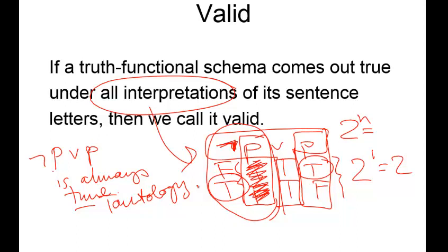When testing an argument, we turn it into a conditional and check whether the statement as a whole always comes out true. If it always comes out true under all interpretations of its sentence letters, we call it valid.